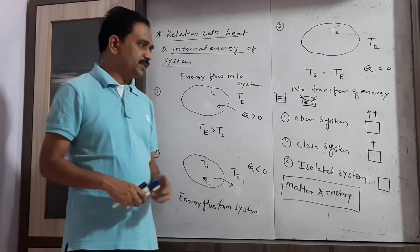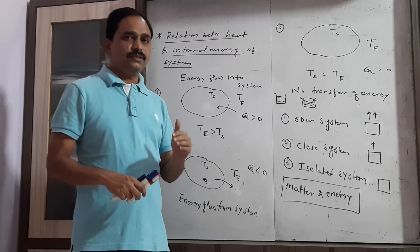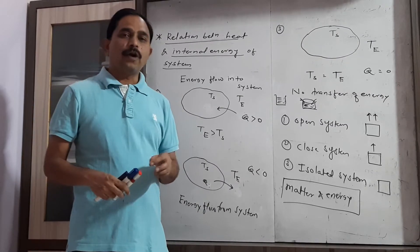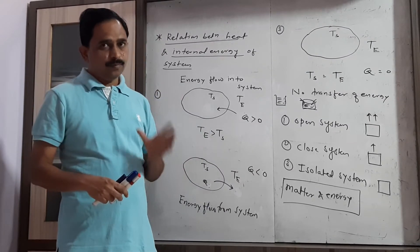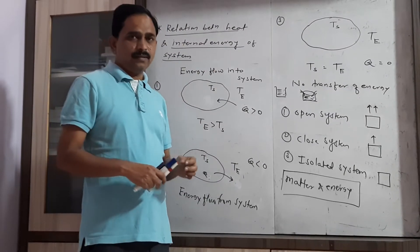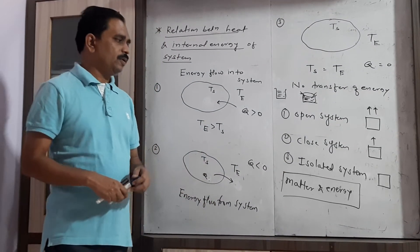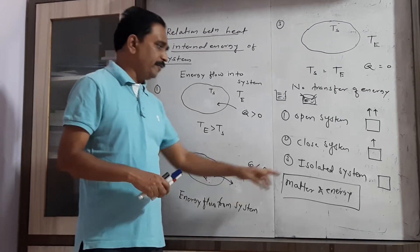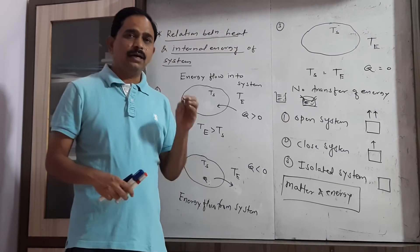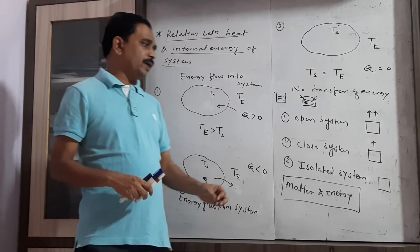A closed system is one in which only heat energy is exchanged from system to surrounding — for example, when we boil water in a boiler. An isolated system is one in which neither matter nor heat energy is allowed to move from system to surrounding.